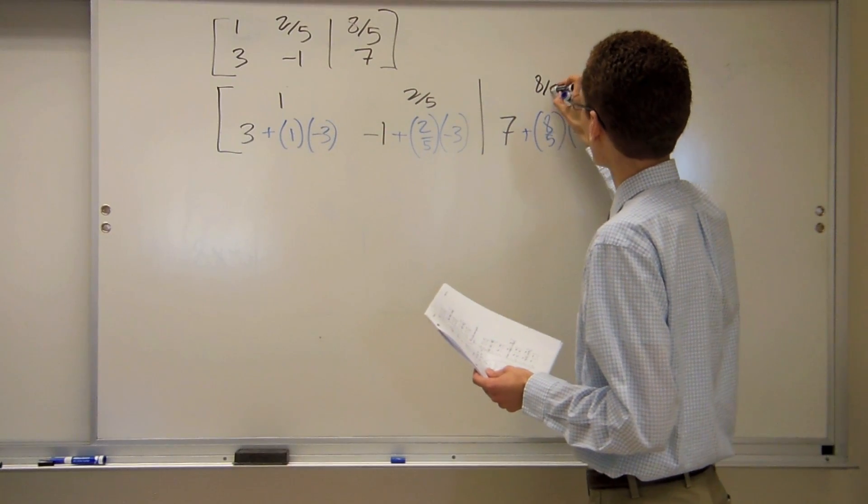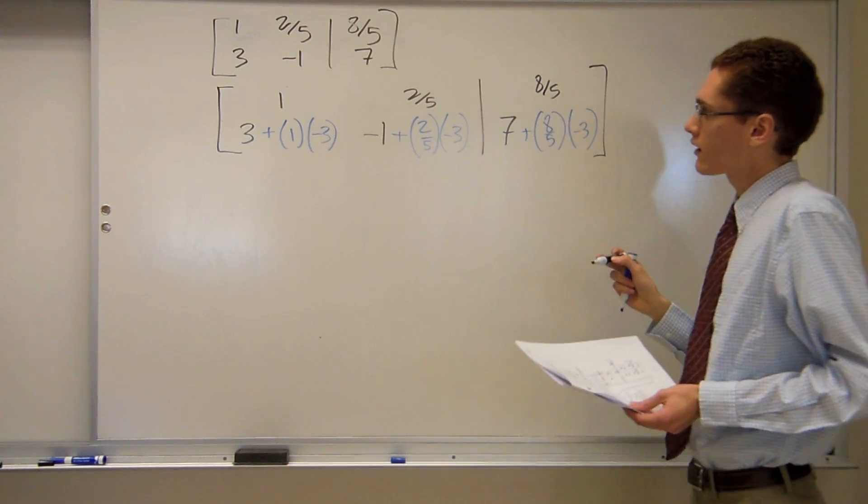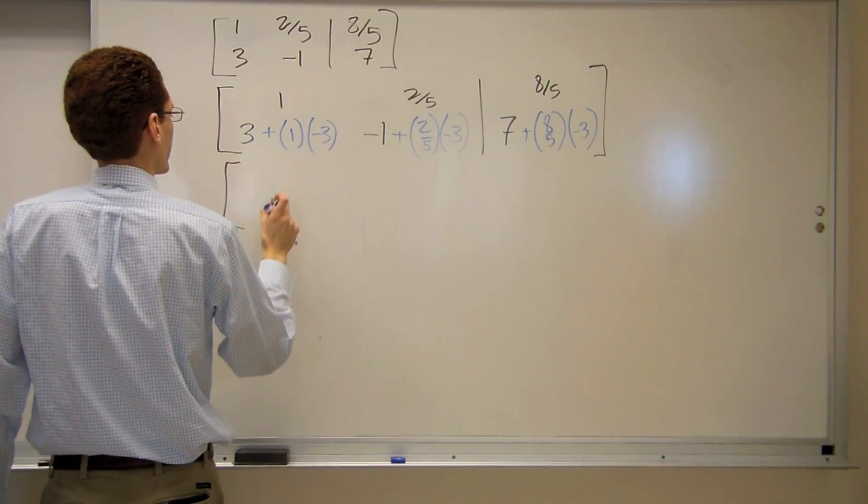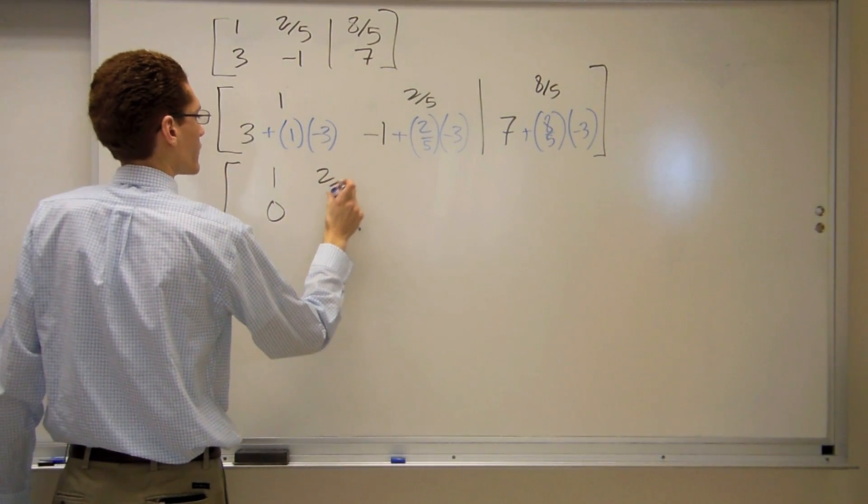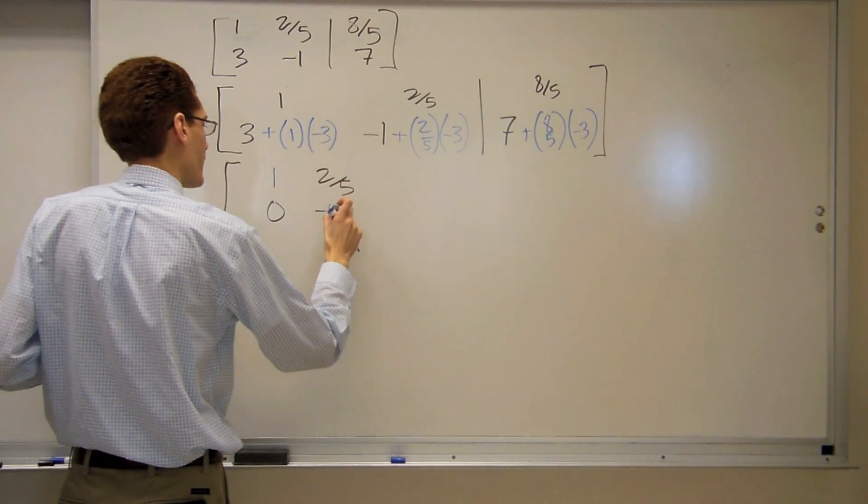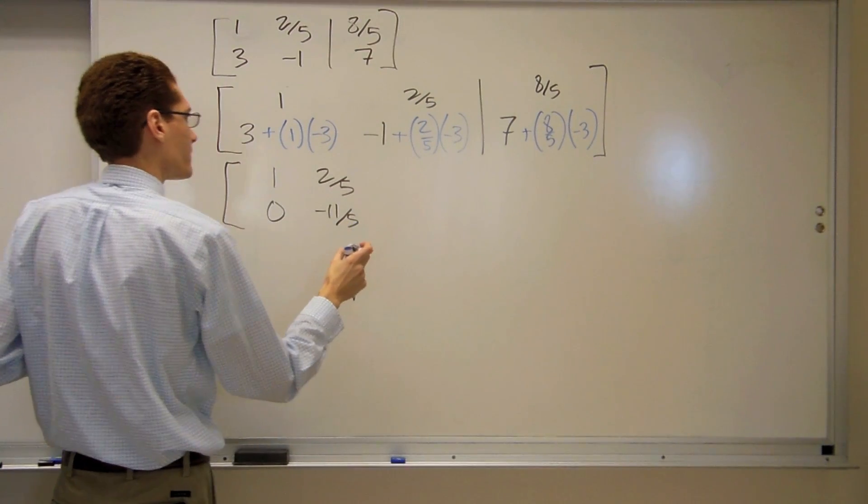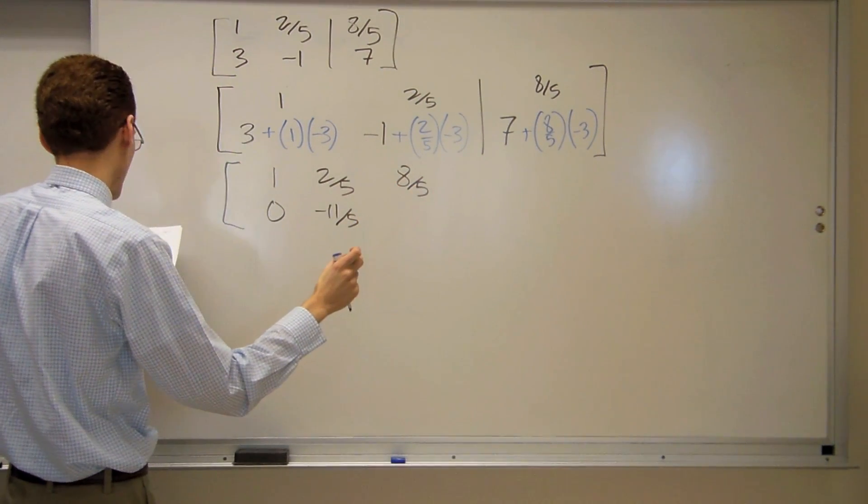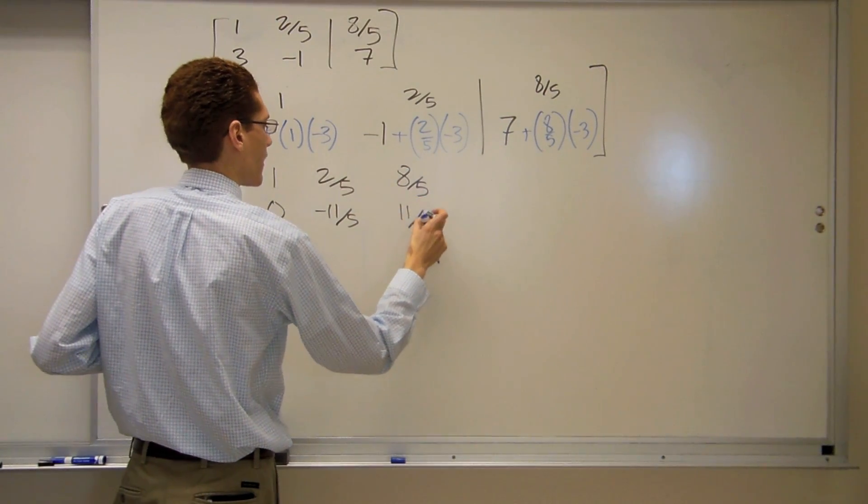And then I have 7 plus 8 fifths times negative 3. Still have 8 fifths up here. So this one simplifies to 1, 0, 2 fifths, negative 11 fifths, 8 fifths, and positive 11 fifths.